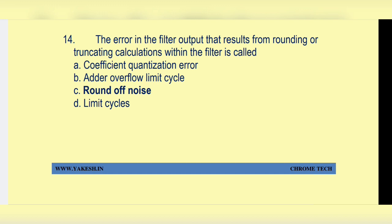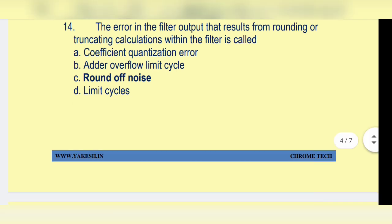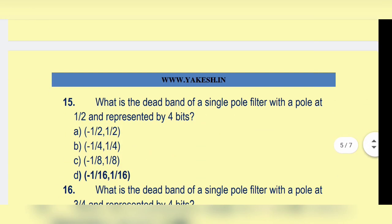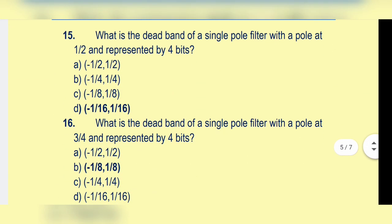The error in the filter output that results from rounding or truncating calculations within the filter is called option c: round-off noise. What is the dead band of a single pole filter with a pole at 1/2 and represented by 4 bits?